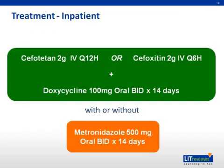Per the Center for Disease Control, the recommended first-line treatment includes a cephalosporin with broader anaerobic coverage, such as cefotetan or cefoxitin, with doxycycline for a total of 14 days. After clinical symptoms improve, patients may continue doxycycline with or without metronidazole for a total of 14 days. There are many alternatives to this regimen, and there is limited evidence that any regimen is better than the other.